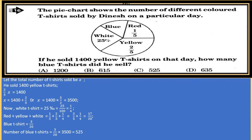The pie chart shows the number of different colored t-shirts sold by Dinesh on a particular day. If he sold 1400 yellow t-shirts on that day, how many blue t-shirts did he sell? The whole pie chart shows the total number of t-shirts Dinesh sold. He sold 1/5 red t-shirt, 2/5 yellow t-shirt, and 25% white t-shirt.